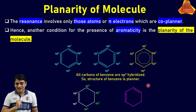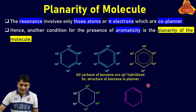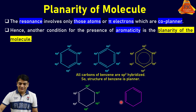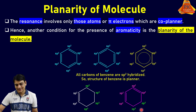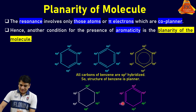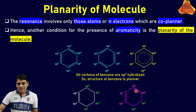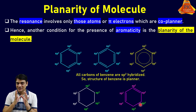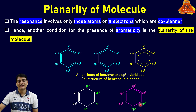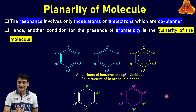Let's take one more example. Here, four carbon atoms are sp2 hybridized because two double bonds are present, while the remaining two carbon atoms are sp3 hybridized. There is a possibility that the four sp2 carbons are in a single plane, but the two sp3 carbons will not be, as their structure is three-dimensional. So this structure will also not show aromaticity.